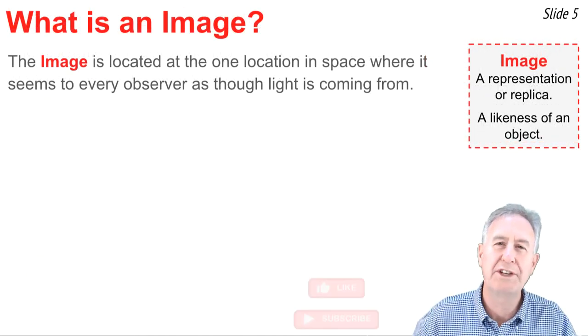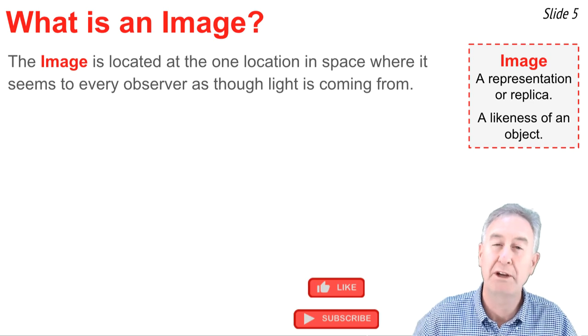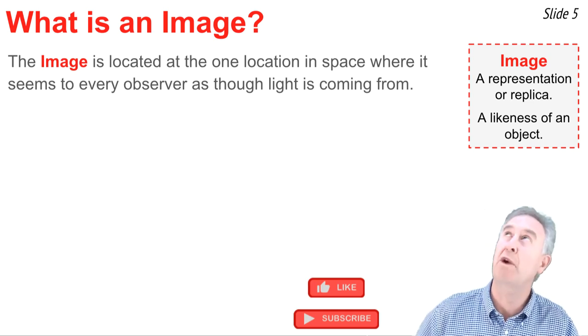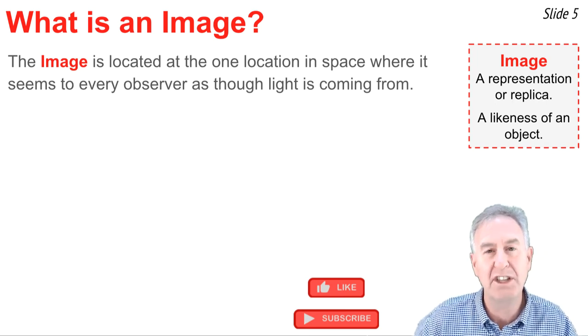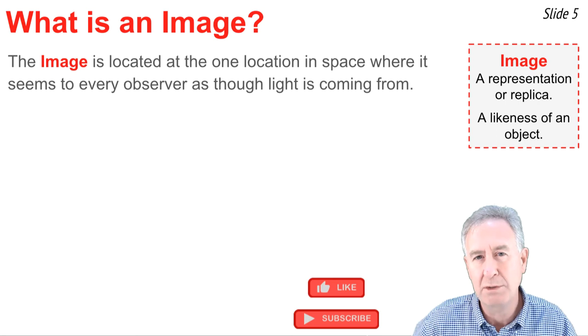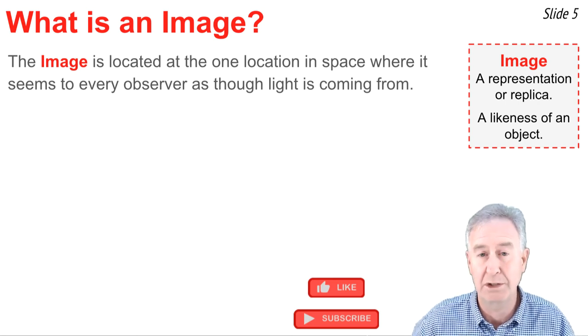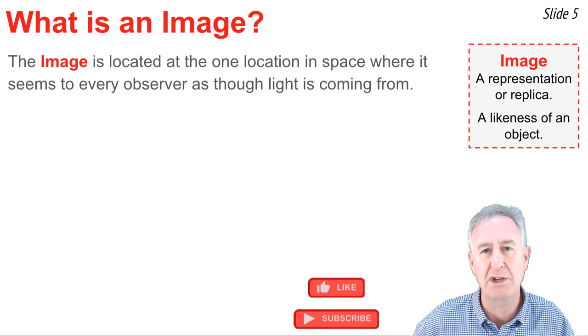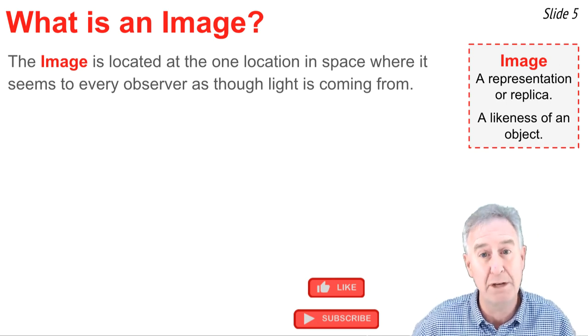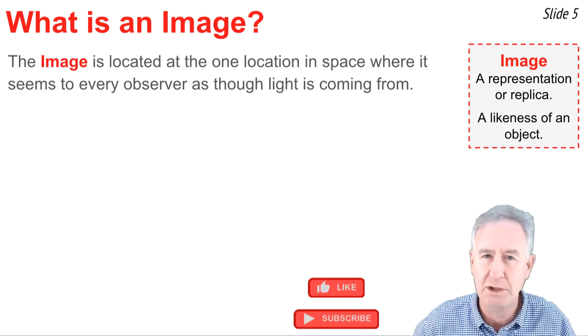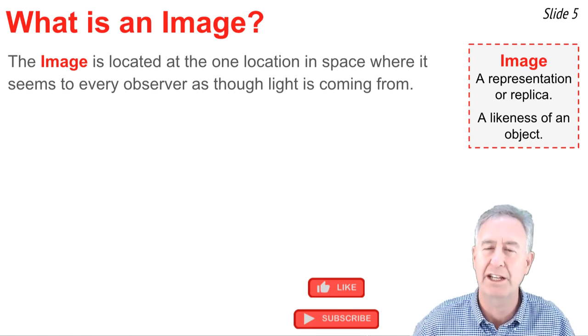If we ask what is an image, a trip to the dictionary would be a good starting place. We would find that an image is a representation or replica of an object. It has the likeness of an object. I like to add to this that sometimes an image is nothing at all. In other words, other than this, there's nothing physically present at the image location. But we can define the image location as the one location in space where it seems to every observer as though the reflected light is coming from.